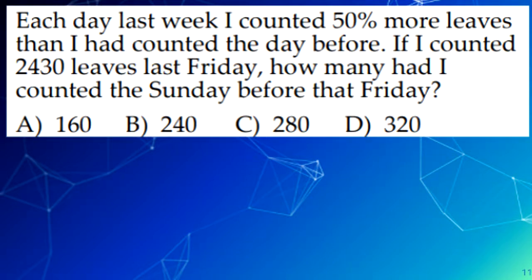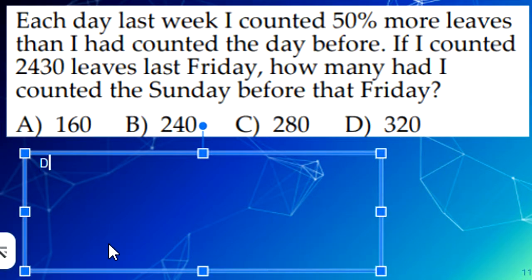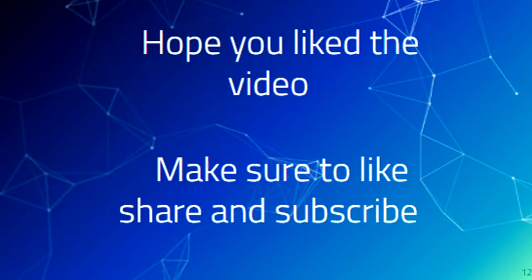We have to work backwards on this. You would have counted two-thirds the number of leaves on each previous day, so Sunday he would have counted two-thirds to the power of 5 times 2,430, which is 320 leaves. So our answer is D, 320. Thank you.